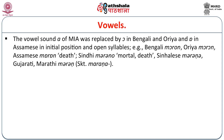For example: Bengali — moron, Odia — moron, Assamese — maran, meaning 'death'; Sindhi — marano 'mortal or death'; Sinhalese — marana; Gujarati, Marathi — maran; Sanskrit — maraṇa. Moreover, in this group, a vowel is affected by the quality of the vowel in a following syllable. For example, in Bengali, ami korari (I do) — the verb root has o followed by e in the next syllable — but tumi koro (you do) has an o sound.